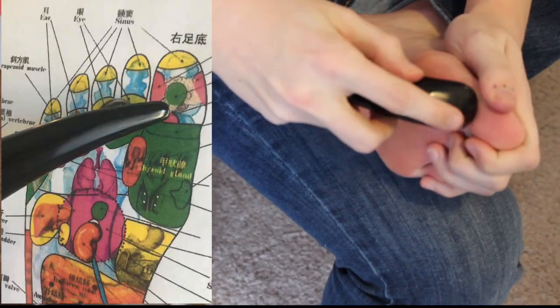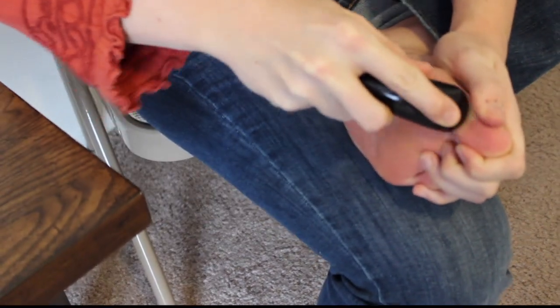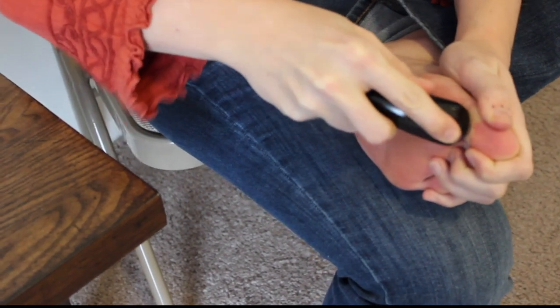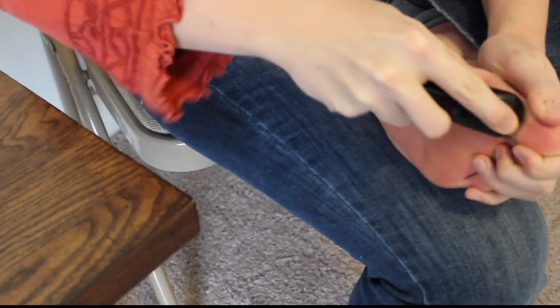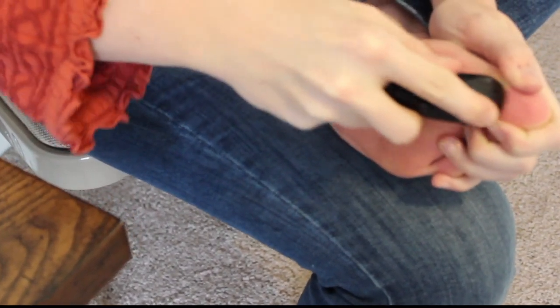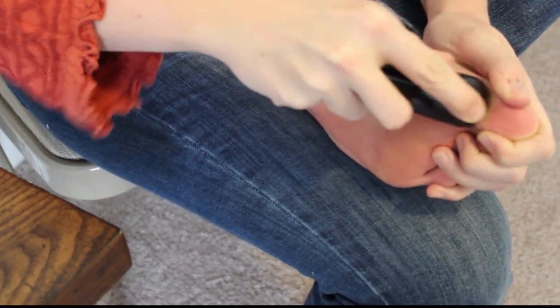So you're going to apply your reflexology technique on the bottom of the big toe, on both sides, right in this area. Again, do it until the area is nice and pink, and then you'll go on the other side.